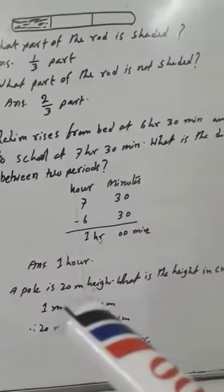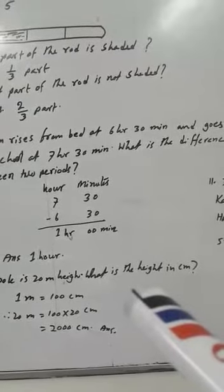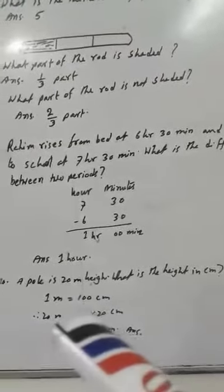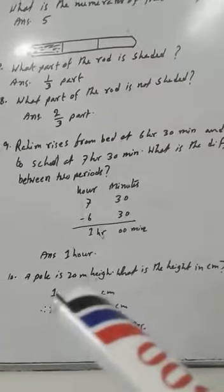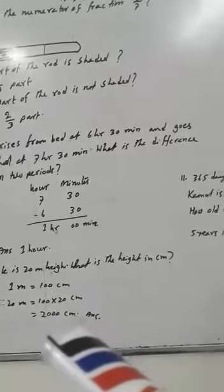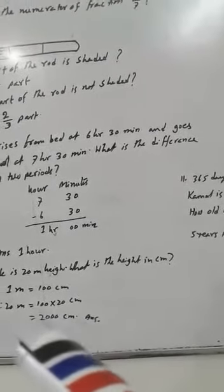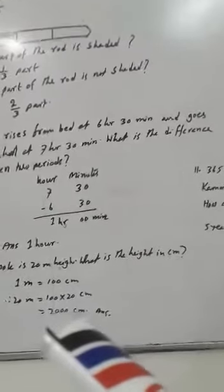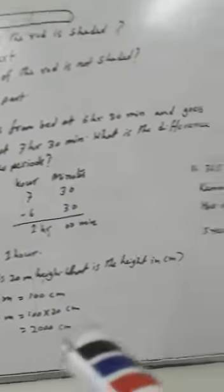A pool is 20 meters high. What is the height in centimeters? We know 1 meter equals 100 centimeters. Then 20 meters equals 100 multiplied by 20; 2 × 1 is 2, with zeros giving 2000. So the answer is 2000 centimeters.